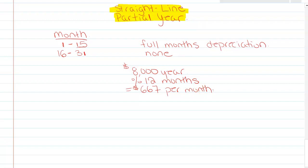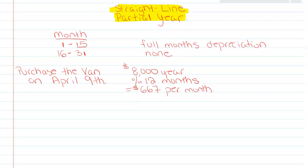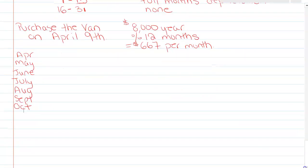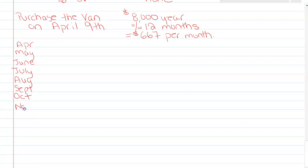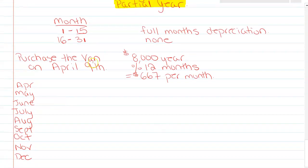If we took that $41,000 van and bought it on April 9th, and I'm recording depreciation on a yearly basis with a December 31st year end, then we have April, May, June, July, August, September, October, November, and December. Since this is the 9th, it fits between the 1st and the 15th.